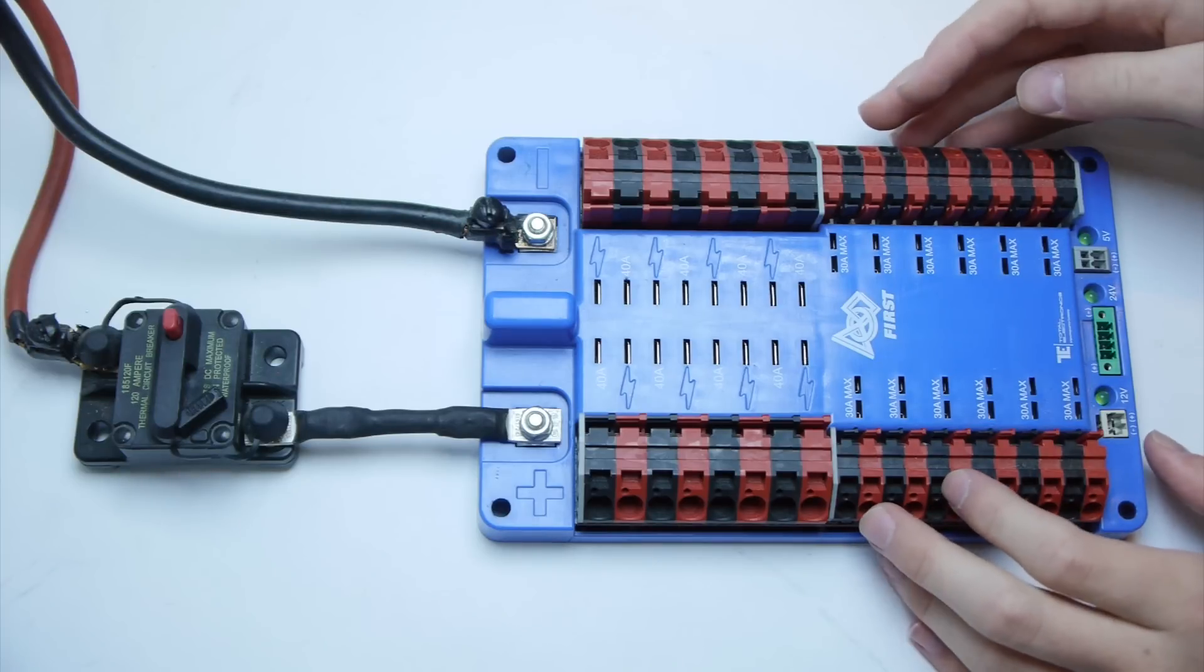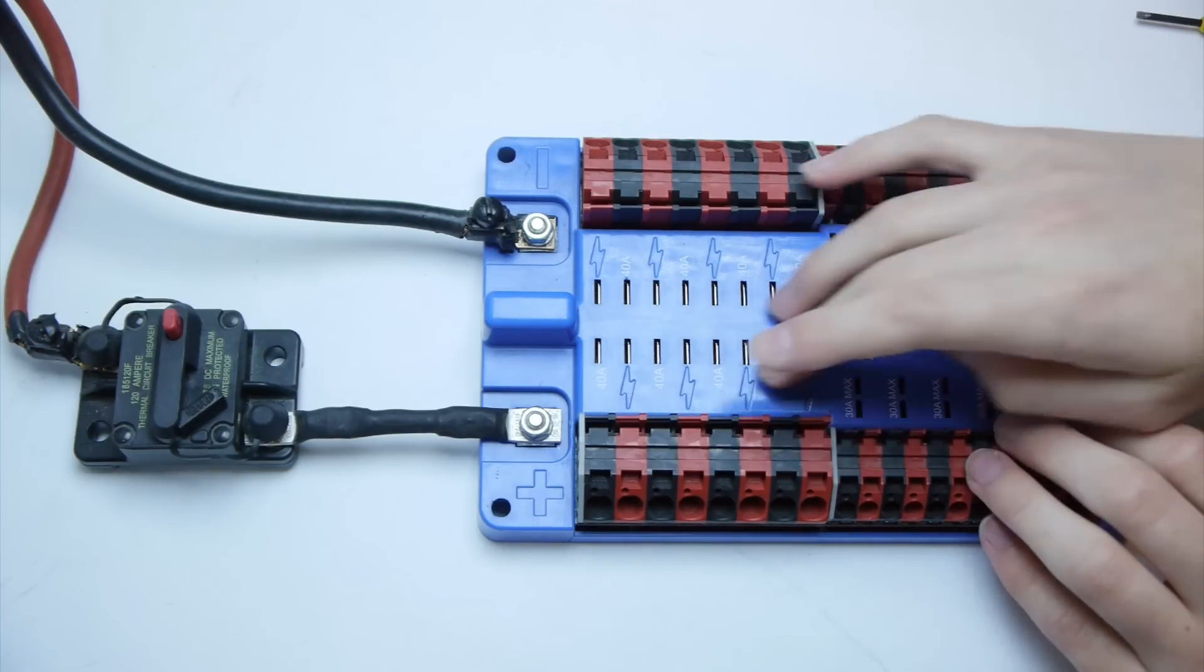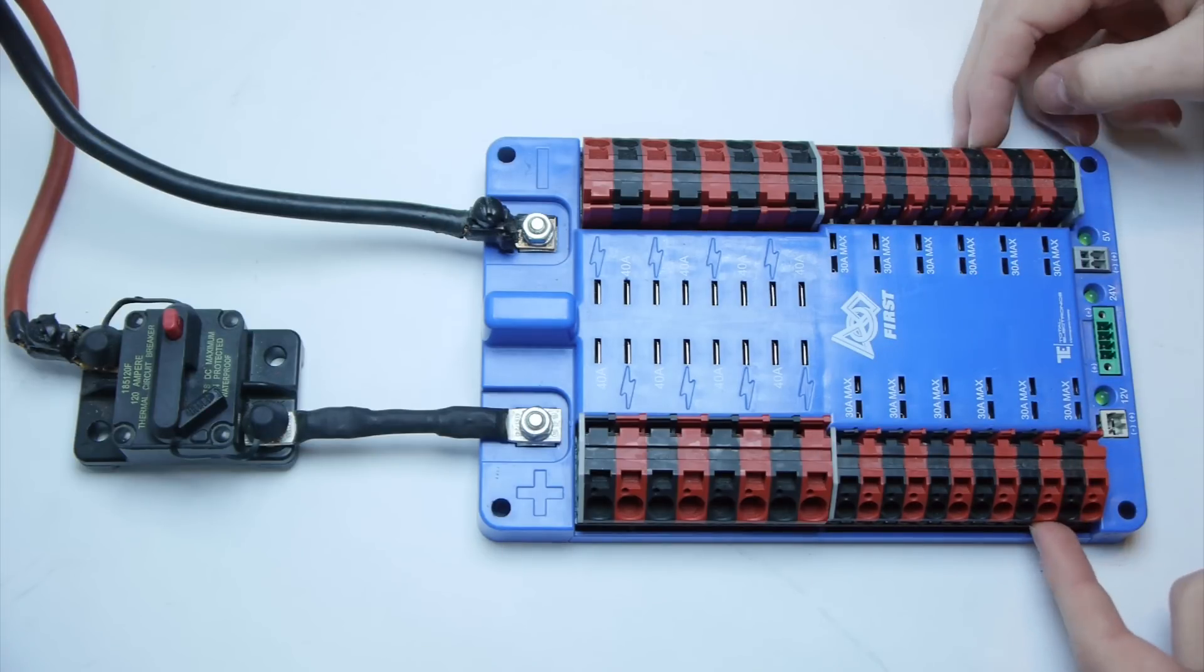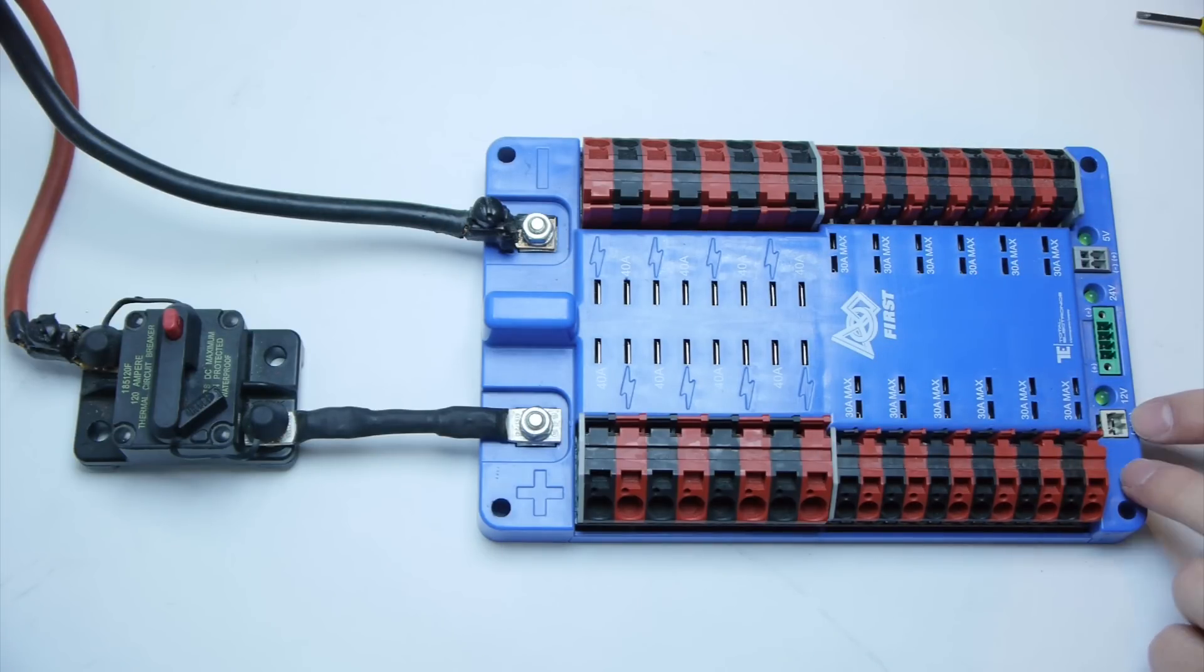There are many ways to get power out of your power distribution board. There are 8 40-amp WAGO connectors, 12 30-amp WAGO connectors, a 12-volt WAGO connector, a 24-volt connector, and a 5-volt WAGO connector.